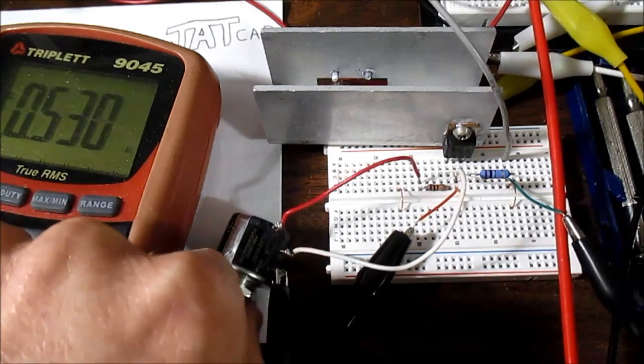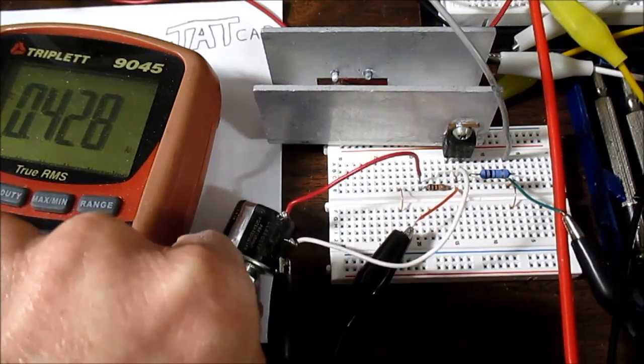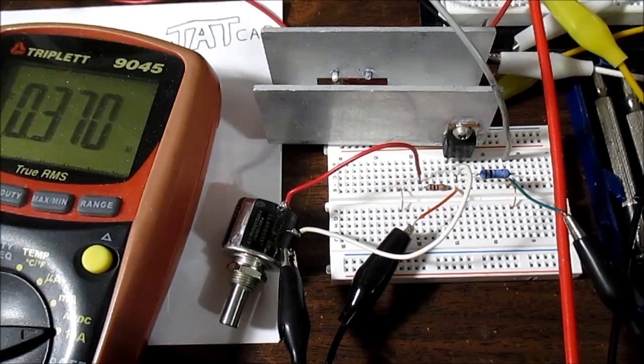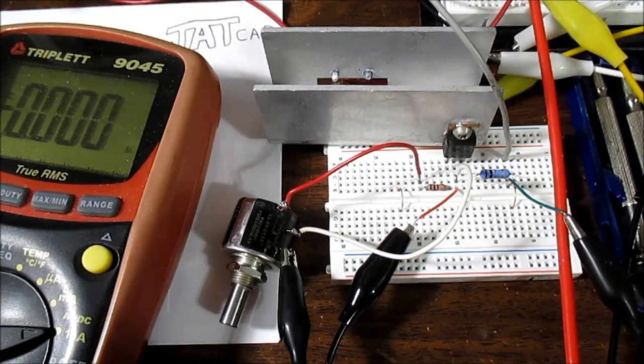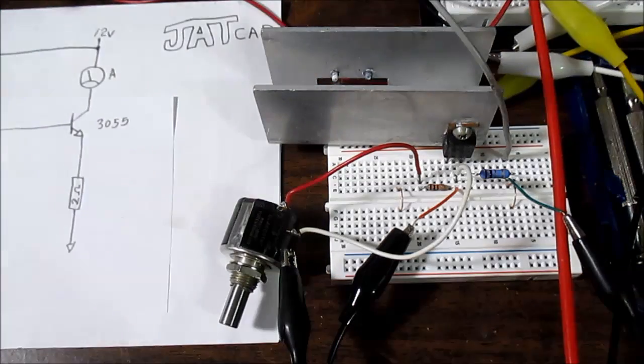I can smell the resistor getting hot. So backing that down. So you can see there's no current limiting. It just gets higher and higher as I turn the potentiometer.